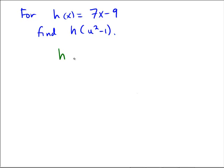So let me give it a shot here. h of u squared minus 1 would have to follow the h rule, which is 7 times something minus 9. The object that is the something is u squared minus 1.